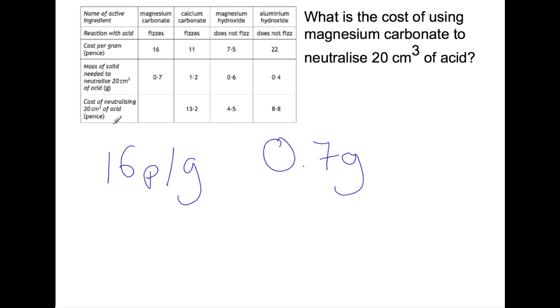We are to work out the cost of neutralizing the 20 centimetres cubed of acid so we need 0.7 grams. It costs 16 pence per gram so we are going to multiply the two together and that takes us to 11.2 pence to neutralize the acid.